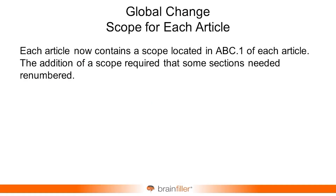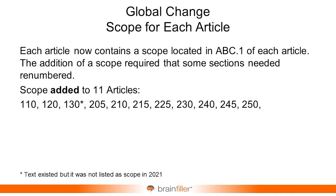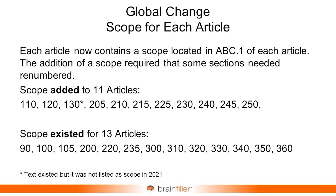Another change: each article within NFPA 70E is now required to have a scope. Believe it or not, not all of them did have a scope. The scope will always be section .1 of each article. Scopes were added to certain articles that lacked them, while other articles already had scopes. Now each article is going to have a scope.